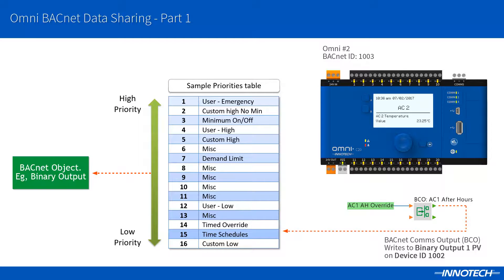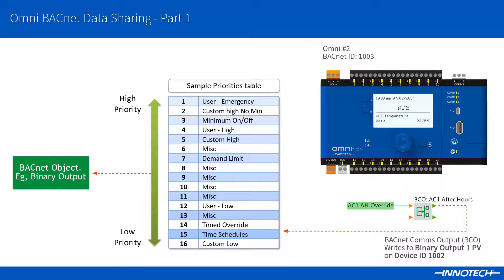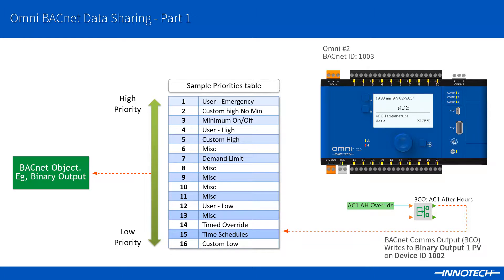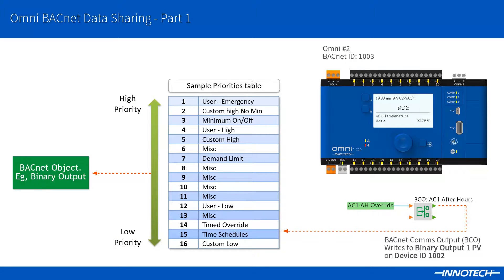The priority array works by allowing you to write a specific priority value to change the present value of the object. For example, if you have a binary output that is controlling a fan enable, a timed schedule may be controlling this at priority 15, which is a low priority. If a person wanted to press the after hours override for this unit when the schedule is off, the configuration would need to control this at a higher priority — in this case you could write the present value at priority 14. As this is a higher priority, it would override the lower priority of 15, thus enabling the fan control. Note that if the object's present value is controlled at priority 1, which is the highest priority, it cannot be overridden by a lower priority until this priority is relinquished or released, as no other priority below 1 will have any effect.